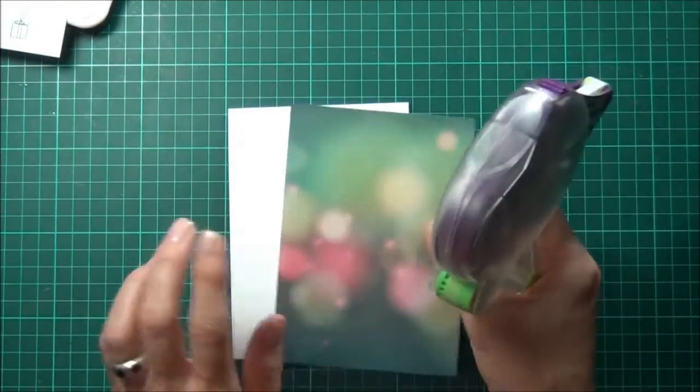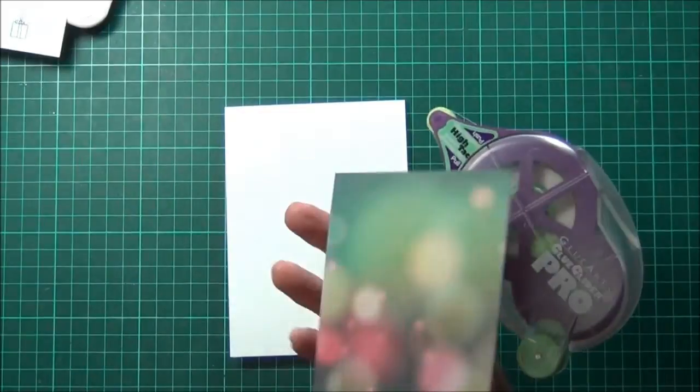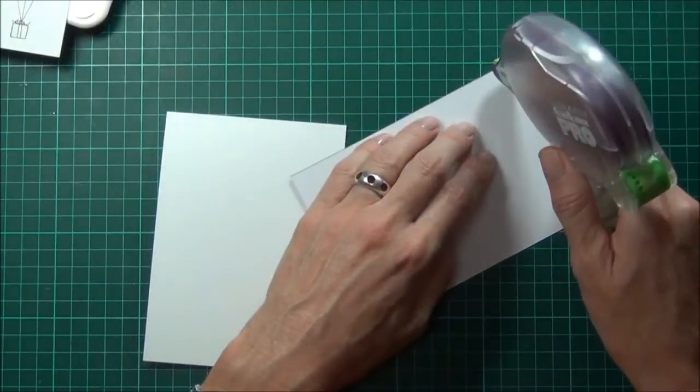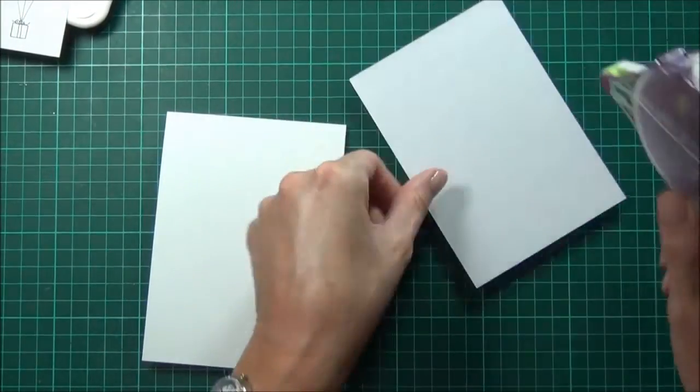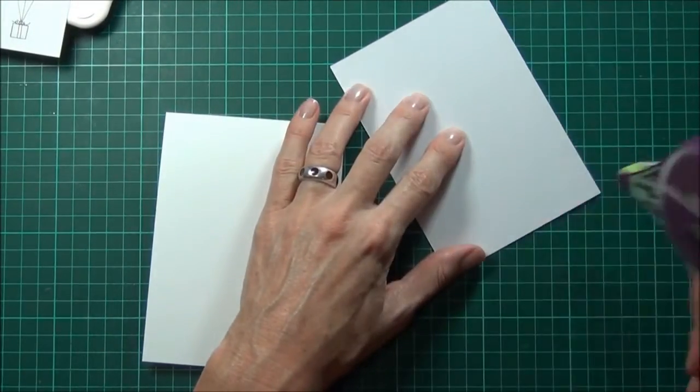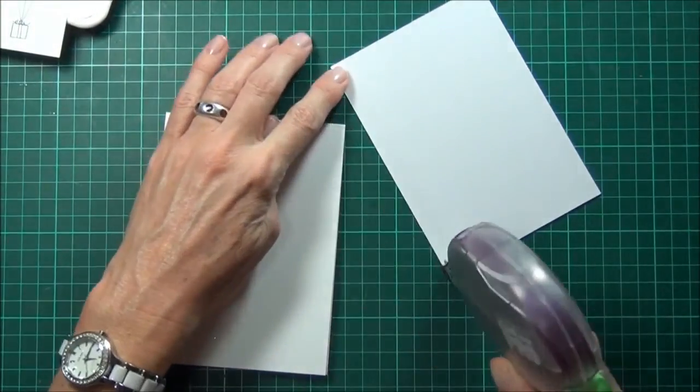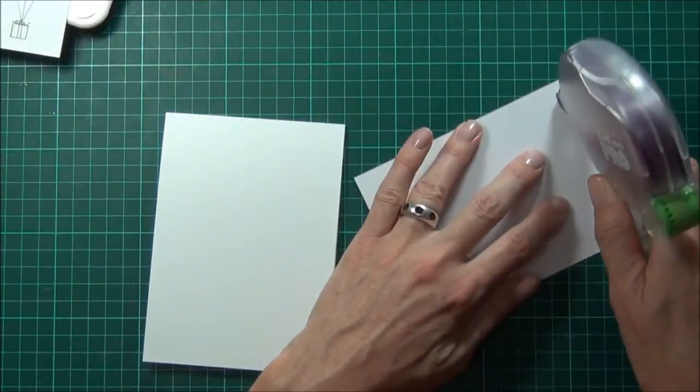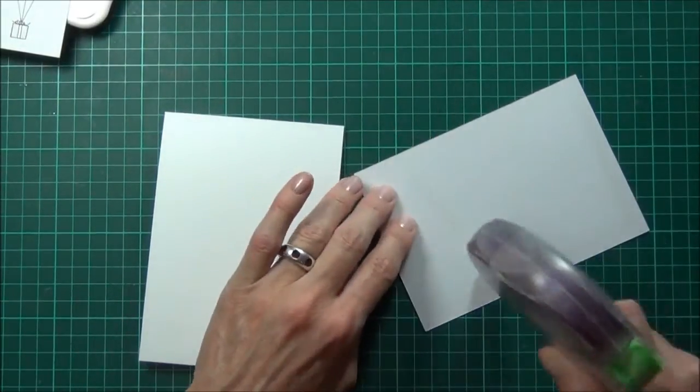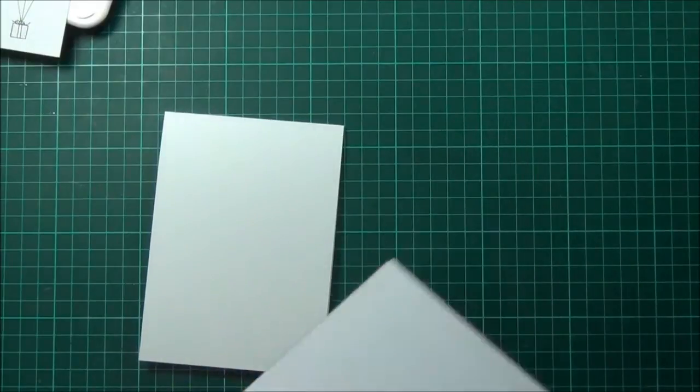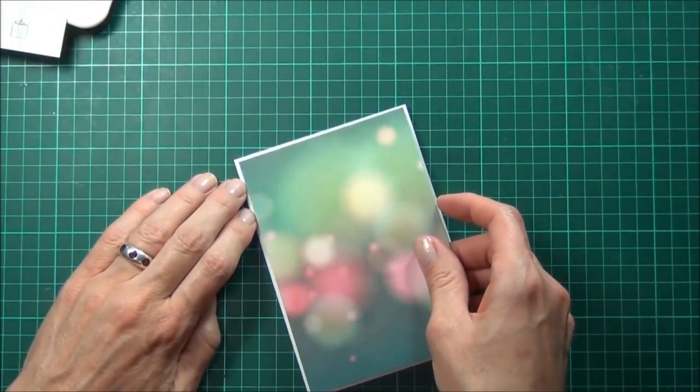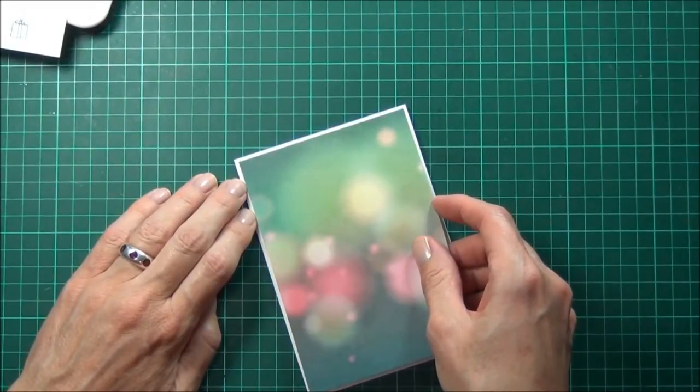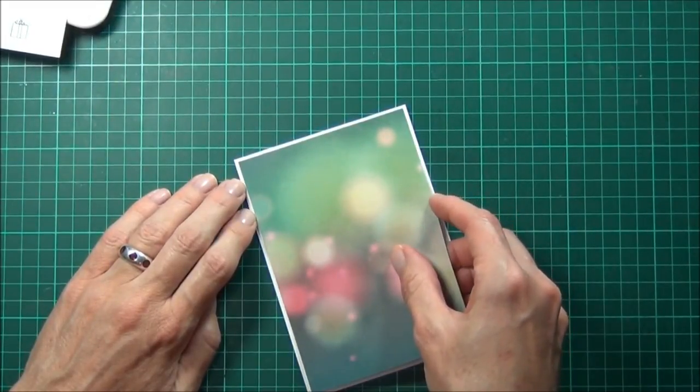Next I'll just grab this awesome piece of paper from a paper pad by Crate Paper. It's called Maggie Holmes. I'll just use my Glue Lighter Pro and that'll adhere it straight onto the card front. This is a top fold card.